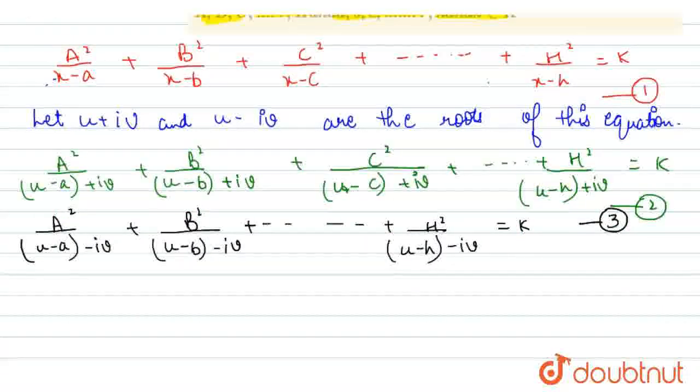Now, we have to do second equation minus third equation. From second equation minus third, ib is common from both equations.